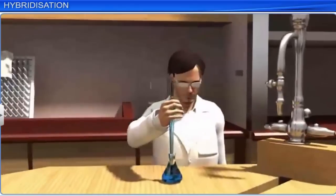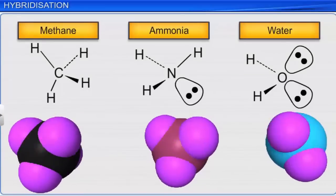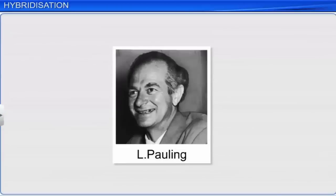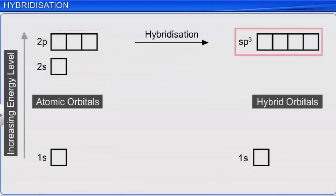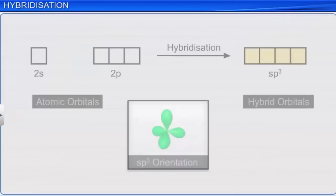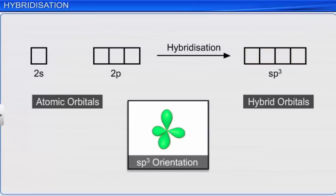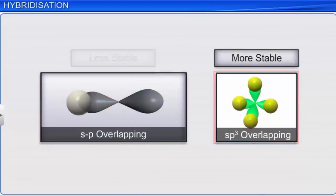During their research, scientists observed that some molecular structures found in nature could not be explained with the existing understanding of atomic orbitals. Pauling introduced the concept of hybridization of atomic orbitals to explain the existence of such molecules. During hybridization, atomic orbitals of slightly differing energies redistribute to form a new set of orbitals with equivalent energies. The number of hybridized orbitals formed is equal to the number of atomic orbitals participating in the process.